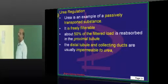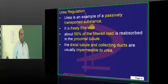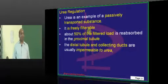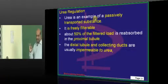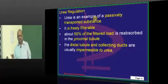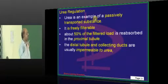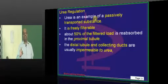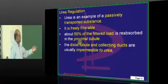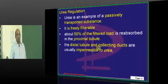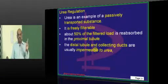What is urea regulation? Urea is a passively transported substance. You must know three things: which are primarily actively transported, which are secondarily passively transported (co-transported), and which are passively transported. Urea is freely filterable. 50% of the filtered load is reabsorbed in the proximal tubule. And the distal tubule and collecting ducts are classically impermeable to urea.